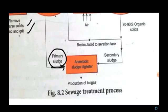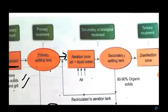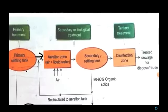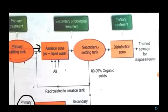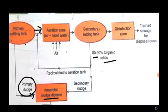The primary sludge is taken to the anaerobic sludge digester, producing biogas. The primary effluent in the aeration zone has air pumped in constantly with agitation, increasing the growth of bacteria in the form of flocs. These flocs digest organic substances and kill disease-causing pathogens. The effluent then goes to the secondary settling tank where about 80–90% of organic solids settle out. The solid organic substances from the secondary settling tank are also taken to the anaerobic sludge digester to produce more biogas.